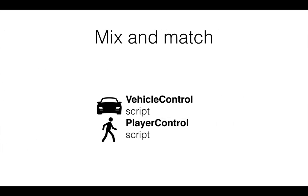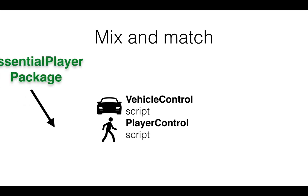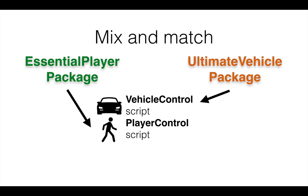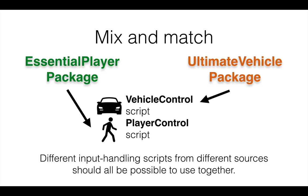We also need to be aware of how people use Unity specifically. People often get things from the asset store. You might have a player control script from one essential player package and a vehicle control script from a different ultimate vehicle package. These different input handling scripts from different sources should all be possible to use together, despite not being designed to work together. Currently in Unity, getting different packages that all rely on input to work together is really a mess, and this is something we really want to work smoothly.